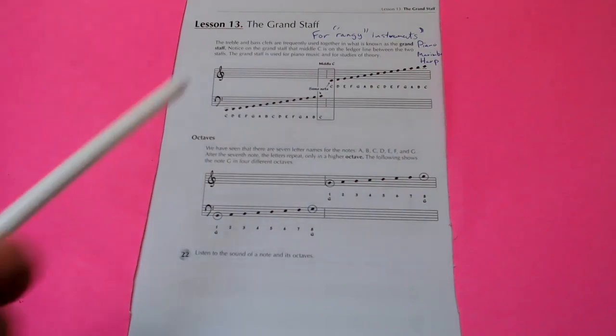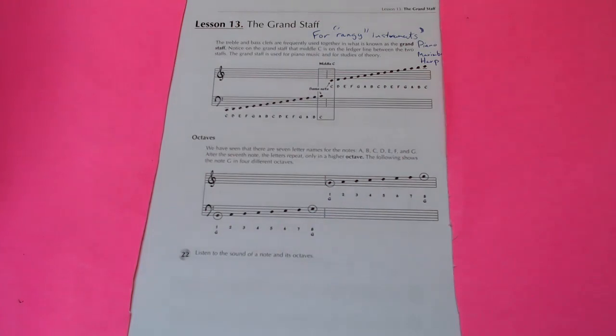The name of this note is middle C. You've probably heard that, especially if you're in piano. Middle C. It is also called, in another system, C4. That's the capital letter C and then a four. So that is just about everything with the grand staff.